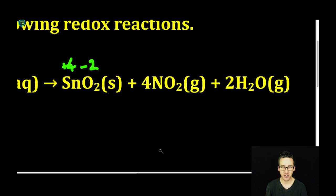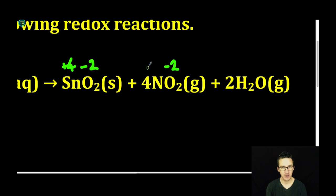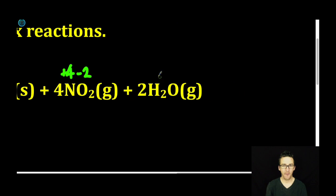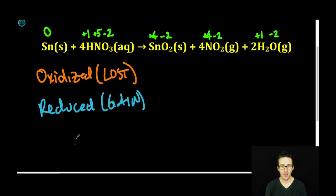Then we come over to nitrogen dioxide. Again, it's a priority thing — oxygen before nitrogen, so oxygen is minus two, which means nitrogen must be plus four. And then finally, water. Priority means hydrogen comes first: plus one for hydrogen, negative two for oxygen.